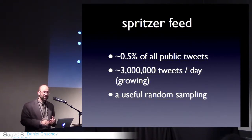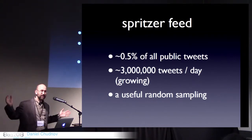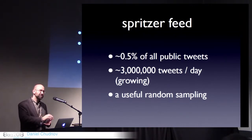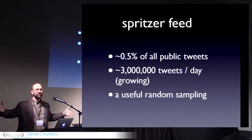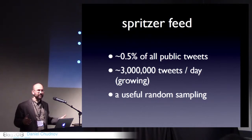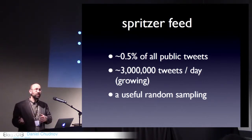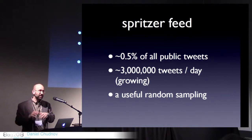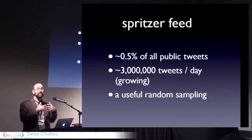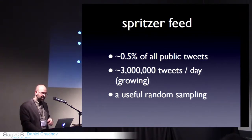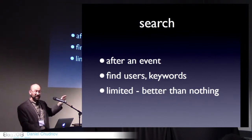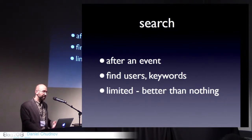Two other ways to get data: first, a spritzer feed, which is a small sampling of the entire firehose — something like one out of every 200 tweets — letting you capture a completely random sampling of what's being tweeted, a few million tweets per day. This is useful for someone who wants to retrospectively look at how topics emerged across a lot of people. Because it's one out of every 200, if there were only 50 people discussing something you might miss it, in which case you'd want one of the other techniques. After an event, you can also do some retrospective searching of Twitter's API, but it's pretty limited in terms of how much data you can get.